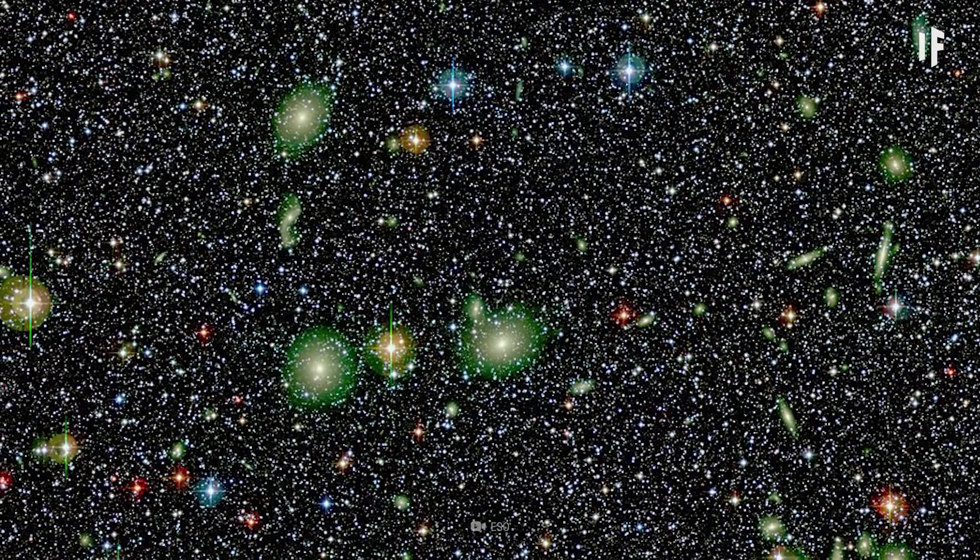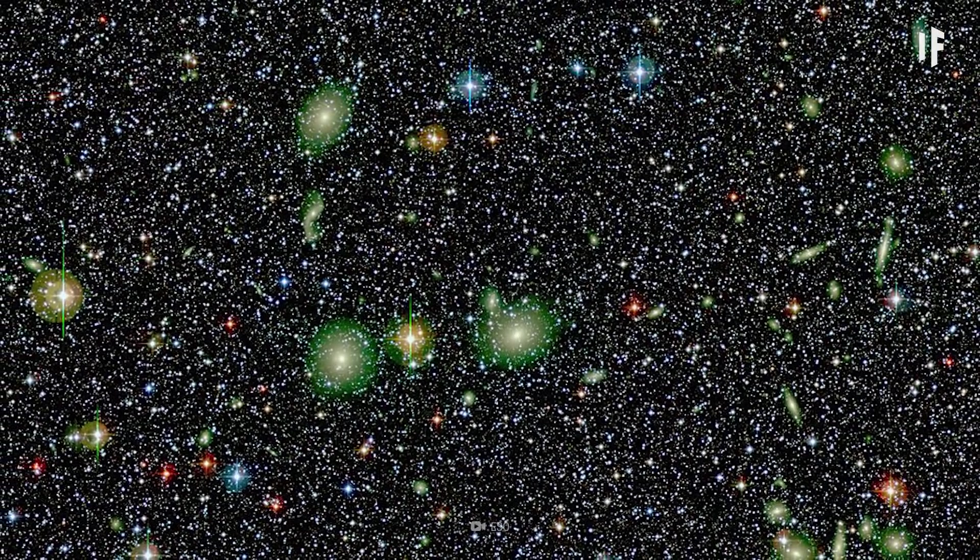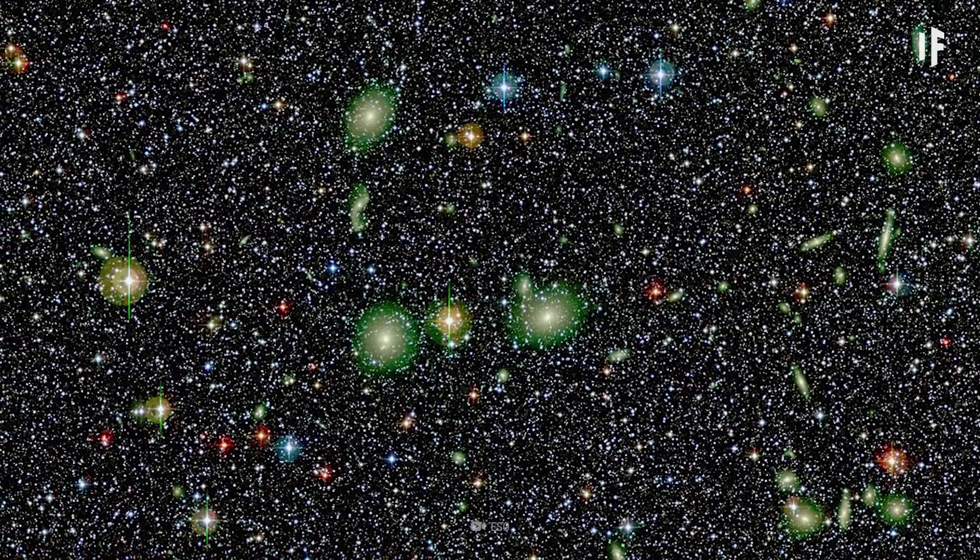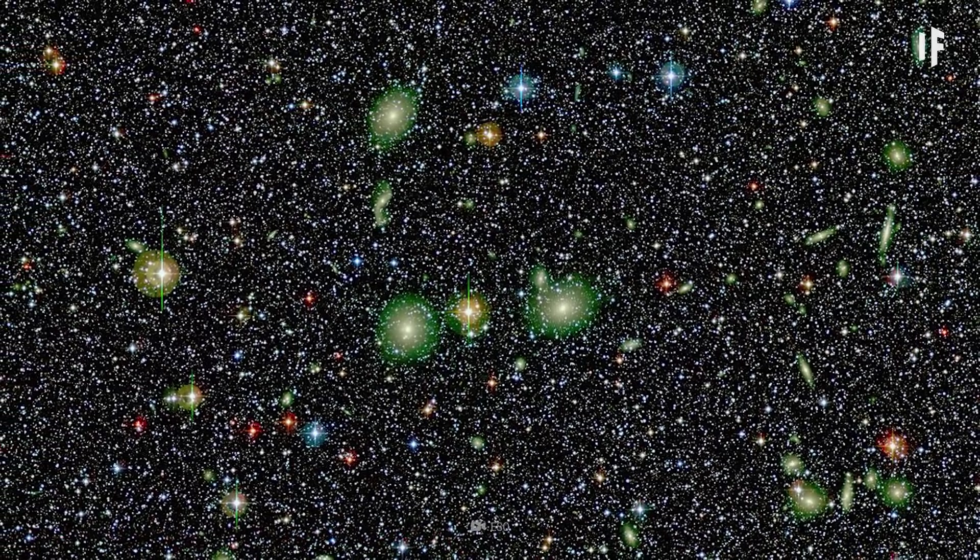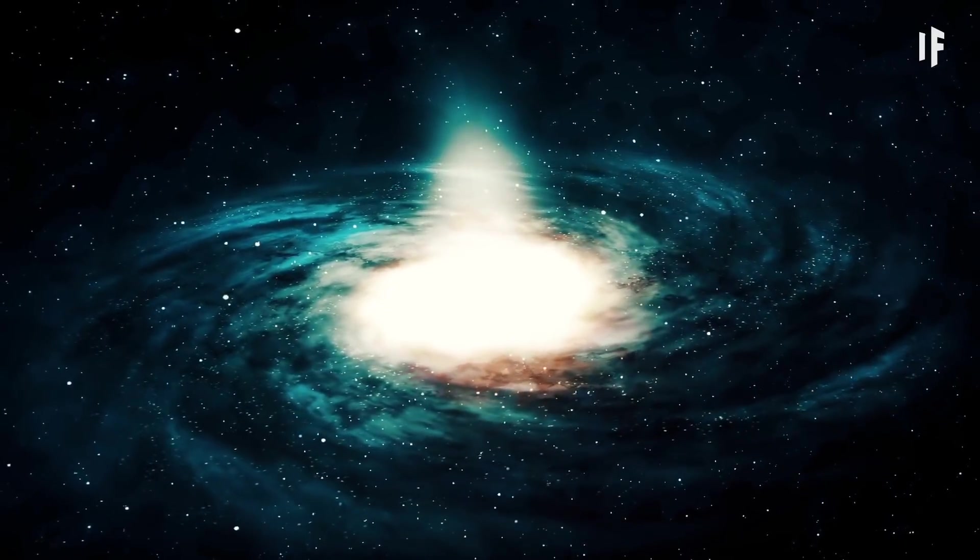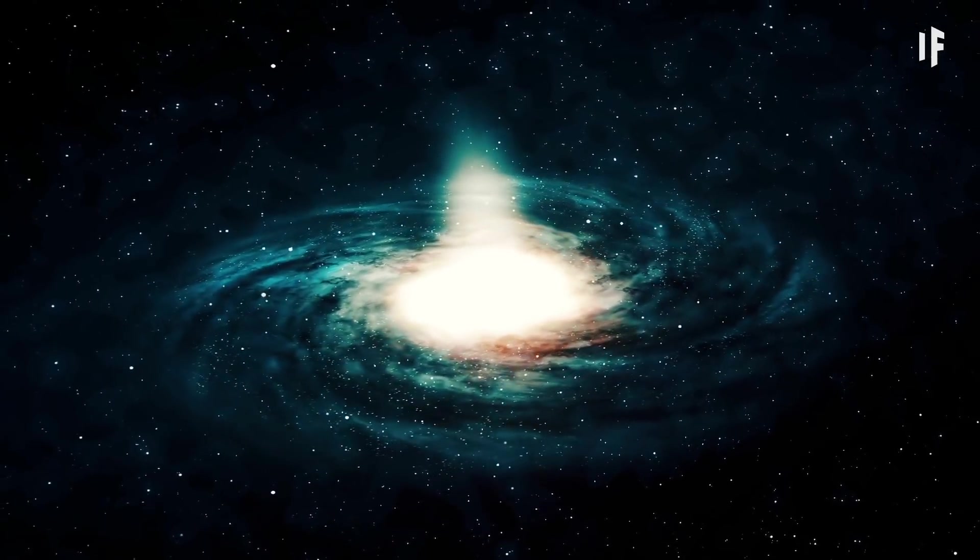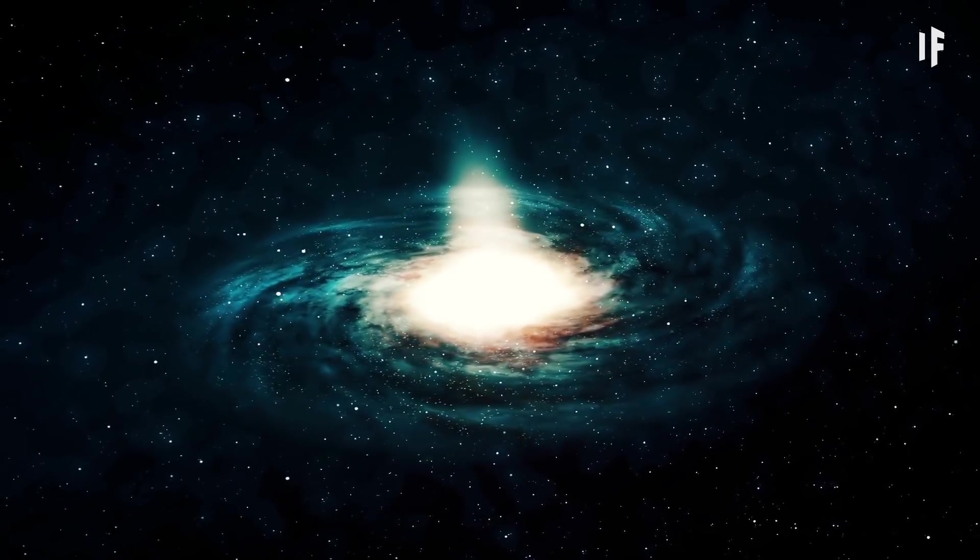Norma has the mass of about 1,000 trillion Suns, which might explain why it's so attractive to these 100,000 galaxies. So now we know where our galaxy is heading and why we're heading there, but what could happen along the way?